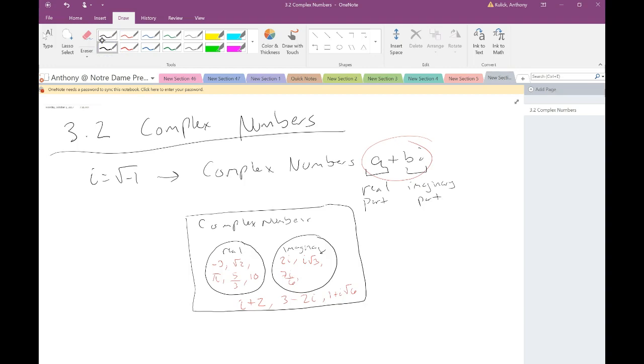So technically, are the real numbers complex numbers? Yeah, right? The complex numbers is this outer box. Everything inside of it is a complex number. So the real numbers are a subset of the complex numbers, and the imaginary numbers are a subset of the complex numbers.